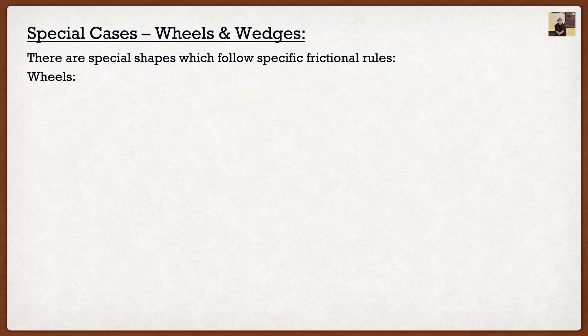So again there's special shapes which follow specific frictional rules. The first one is wheels which again is the worst one. Because remember when we did that free body diagram we said okay, if our force is going to the right then our frictional force is going to the left. Well sometimes it's not that easy to see which way our frictional force actually goes.